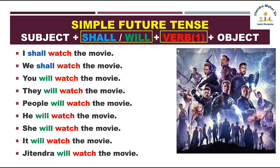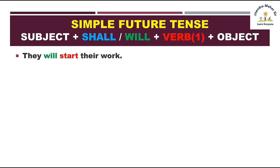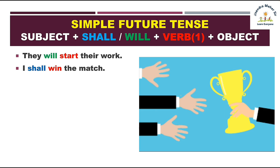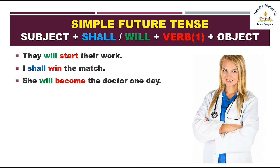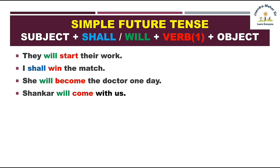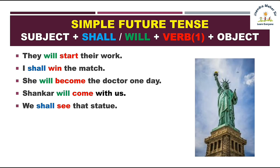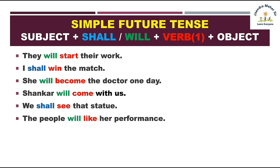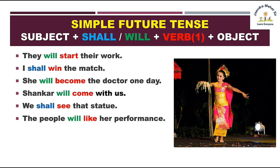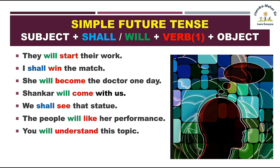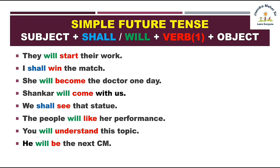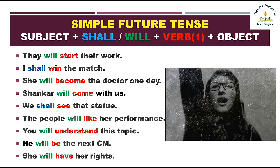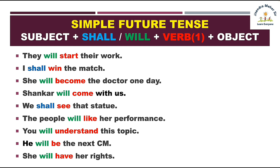Simple future tense ke sentences: They will start their work. She will come with us. We shall see that statue. The people will like her performance. You will understand this topic. She will be the next minister. She will have her rights. Toh hamne dekha shall aur will ke saath hamne verb ka first form istamal kiya.